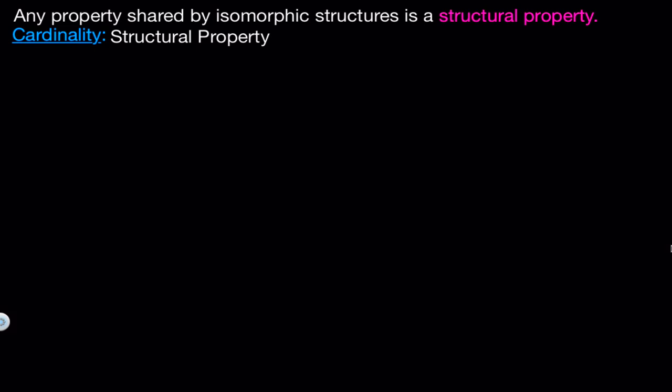Next, let's look at the property that says the set contains the number 7. This property does not need to be shared by isomorphic binary structures, because this property relies on the naming of the elements. Remember, two structures can be isomorphic even if they have no elements in common. So this is what we call a non-structural property.